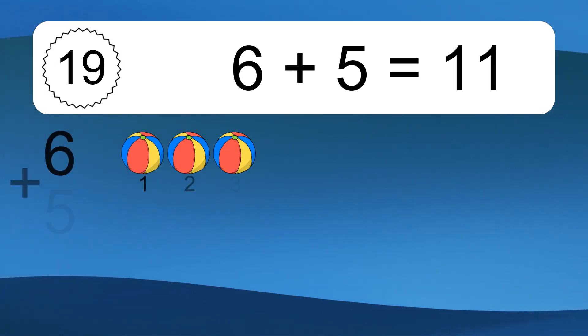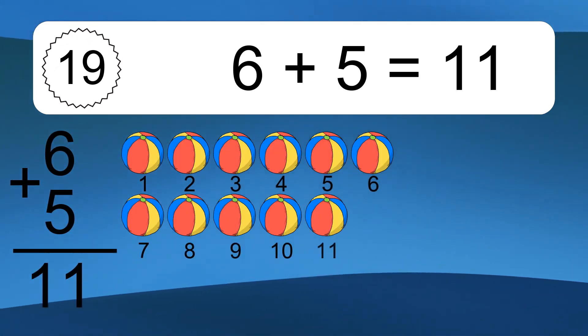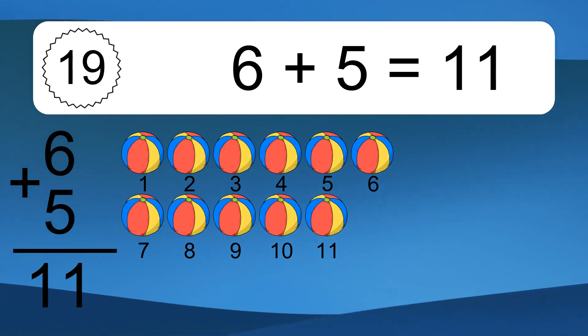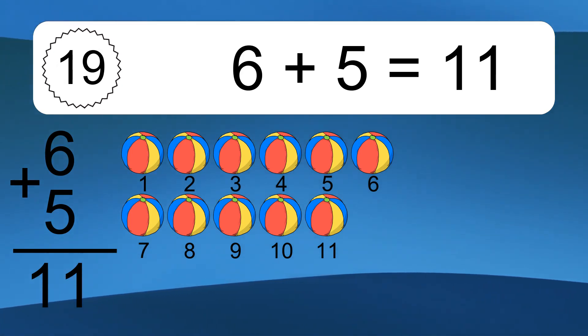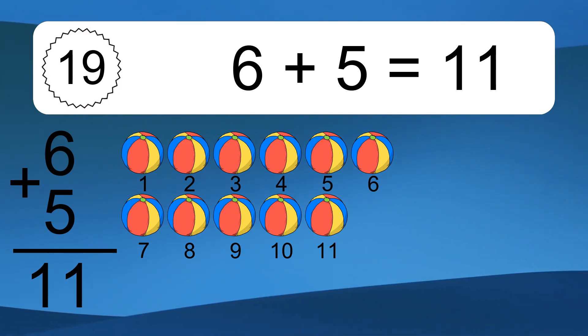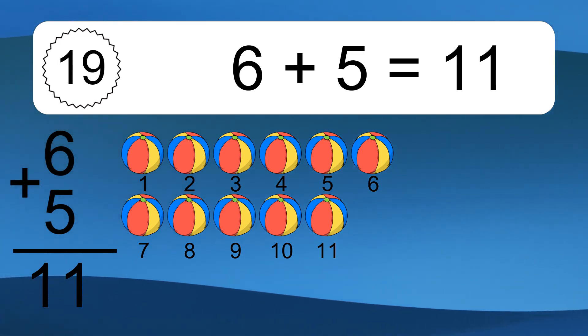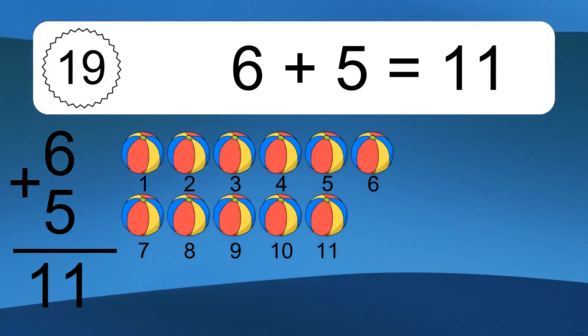6 plus 5 equals what? 6 plus 5 equals 11. Let's count it. 1, 2, 3, 4, 5, 6, 7, 8, 9, 10, 11.